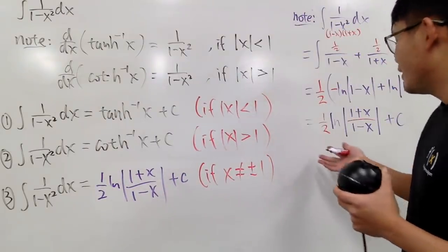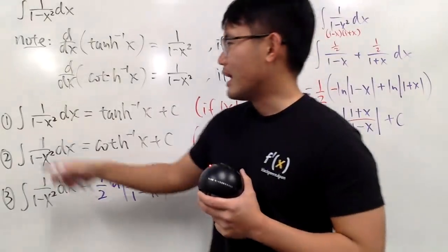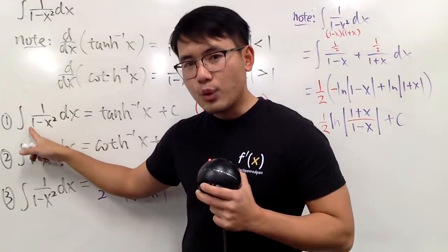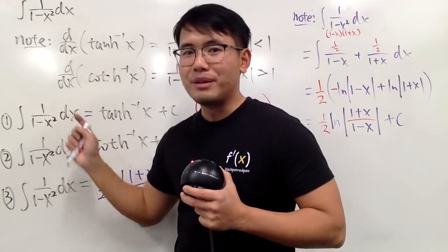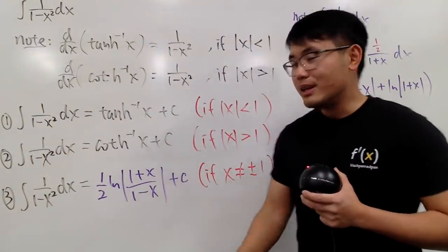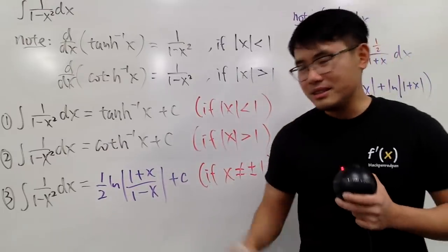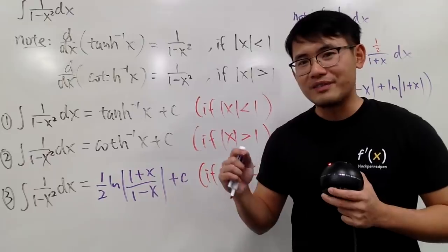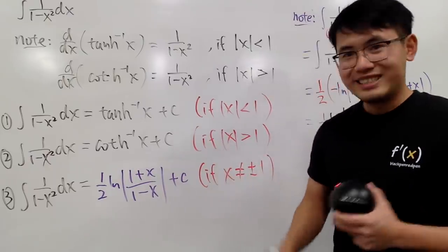Anyway, that's it for this one. Maybe next time we can work on a more general formula — what if you have a squared minus x squared in the denominator instead of 1 minus x squared? Hopefully this clears things up a little bit. Let me know if you have any questions down below, and as always, that's it!